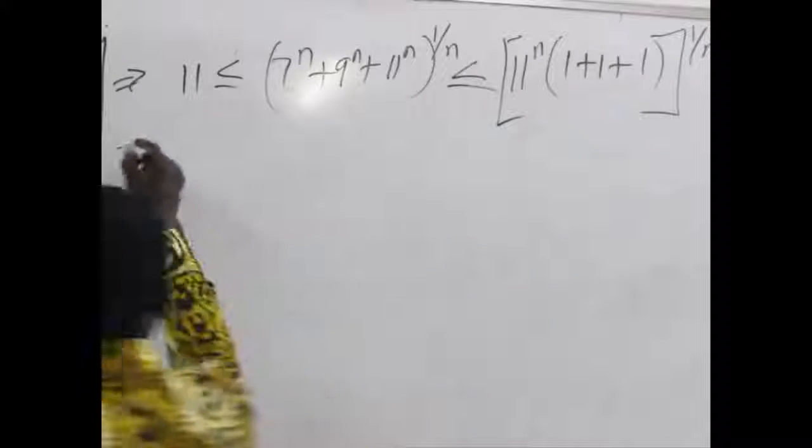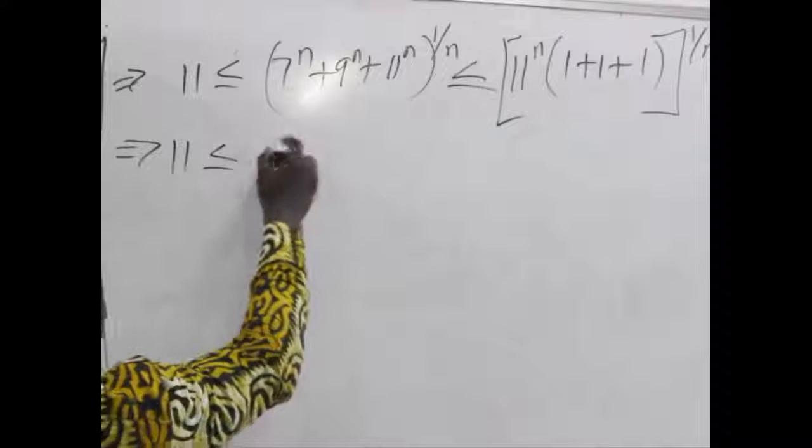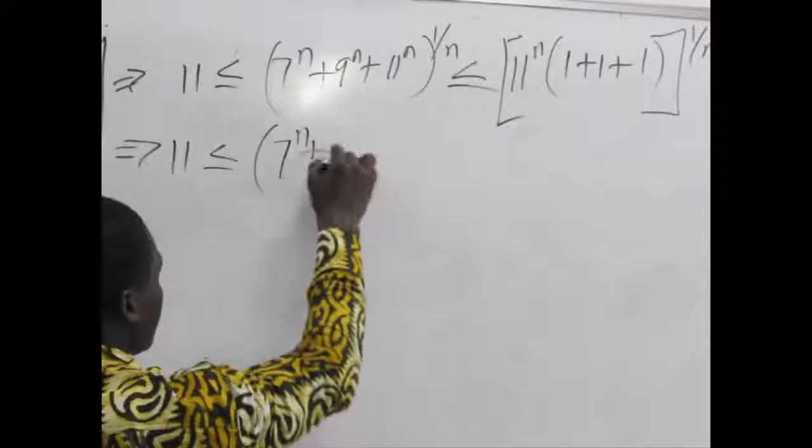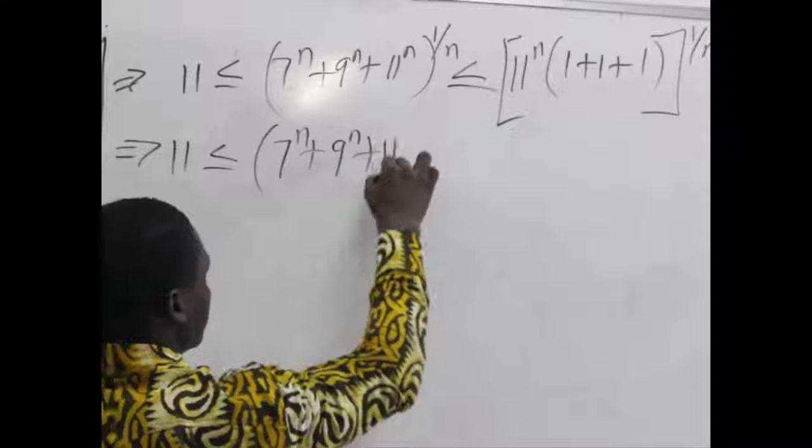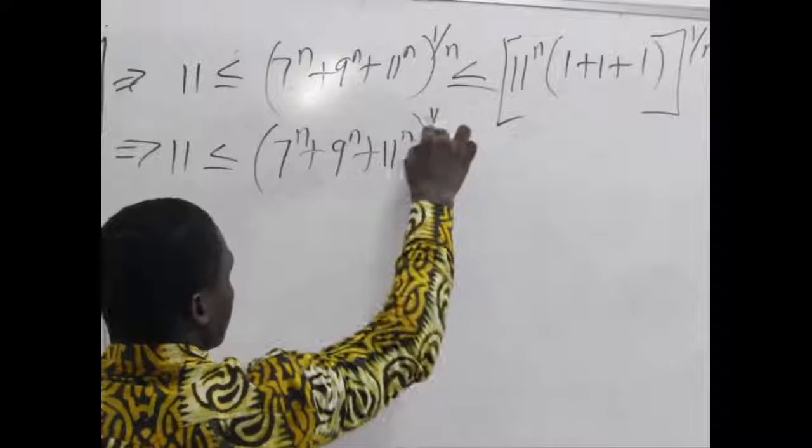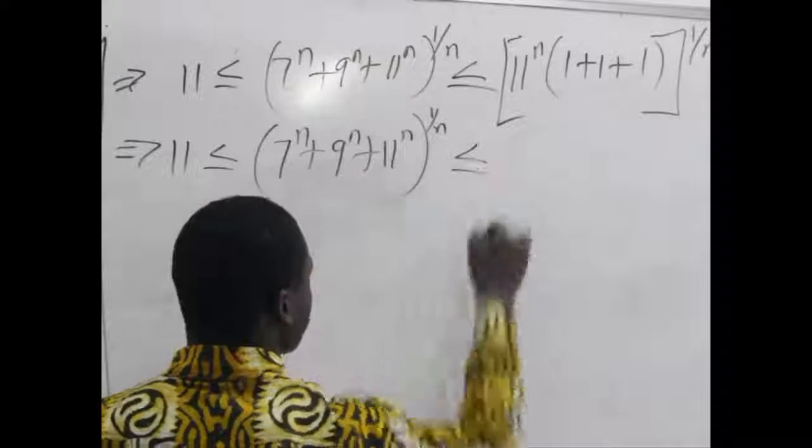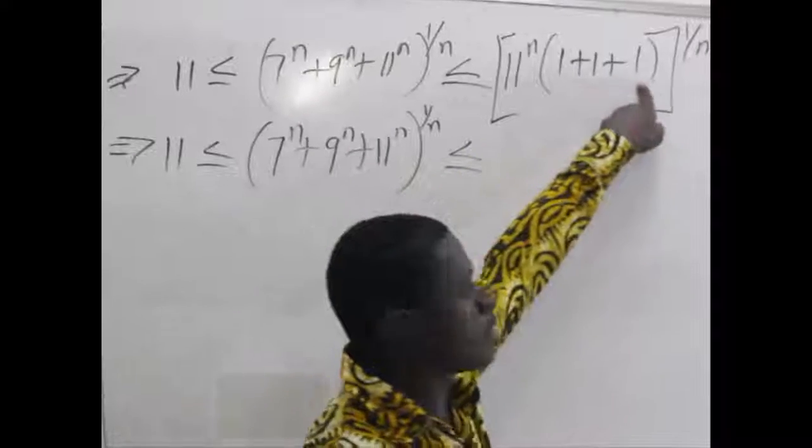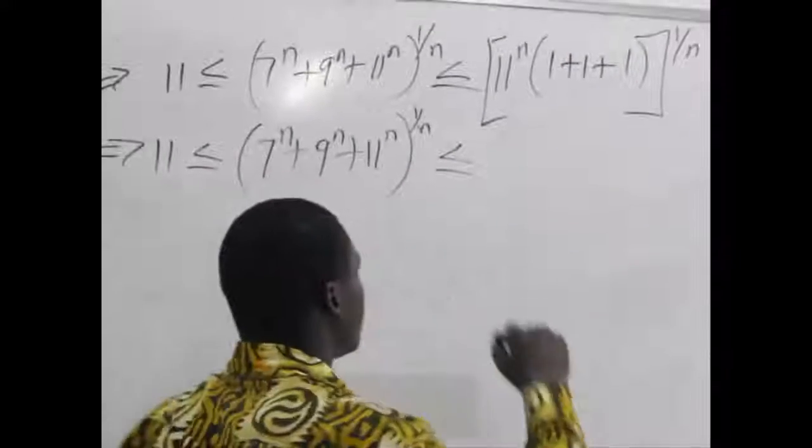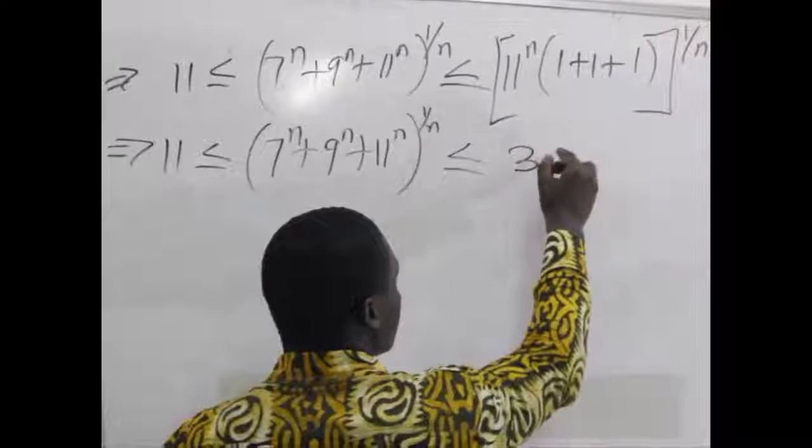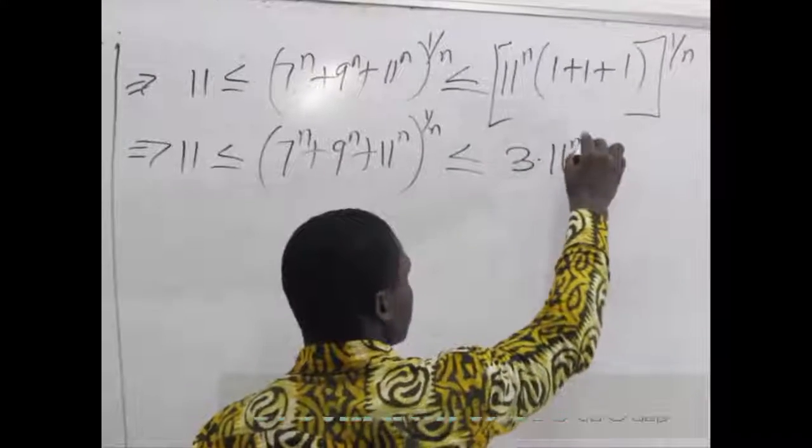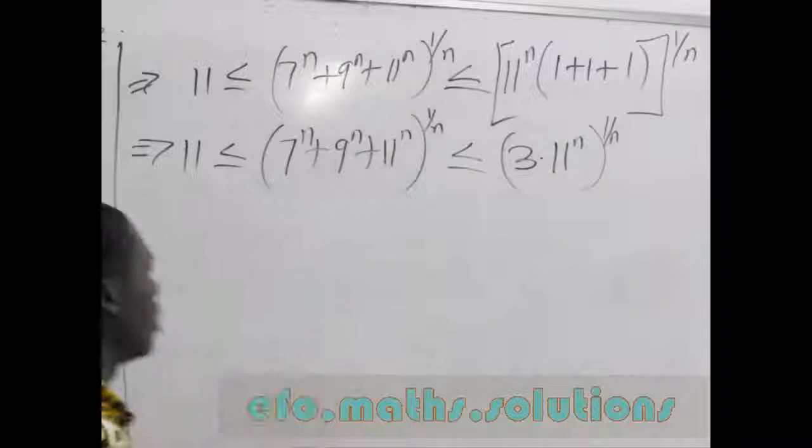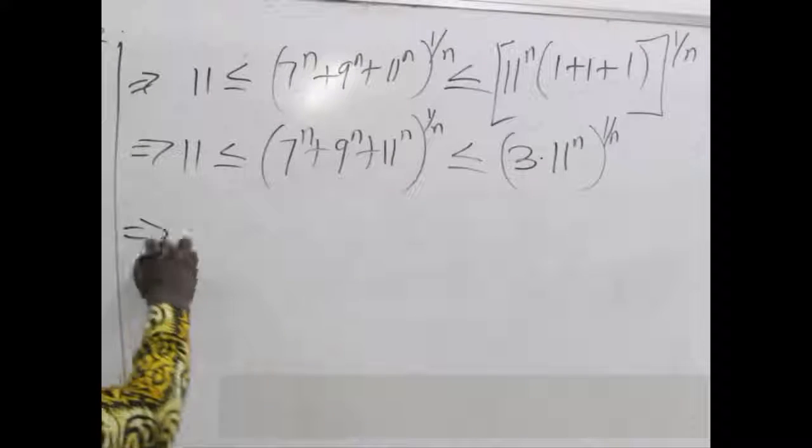So we have 11 less than or equal to (7^n + 9^n + 11^n)^(1/n). And this will be less than or equal to, here we have 1 plus 1 plus 1, this is 3. So we now have 3 multiplied by 11^n, raised to the power 1/n.